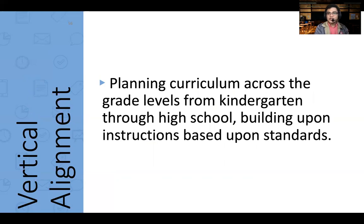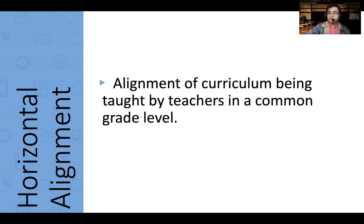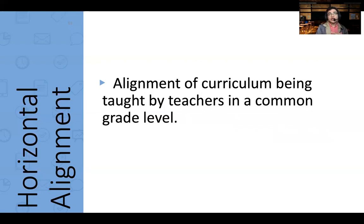Vertical alignment means planning the curriculum across grade levels from kindergarten through high school, or even college, building upon instruction based on standards. Horizontal alignment is the alignment of curriculum being taught by teachers at the same grade level — although different subjects, they should share the same goals. If you look at the K-12 curriculum guides, each one has expected learning outcomes per year level, and the alignment is also present there.